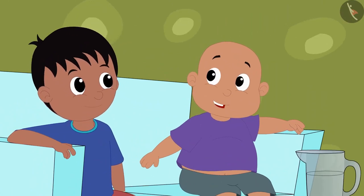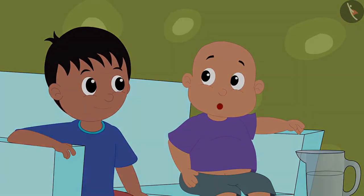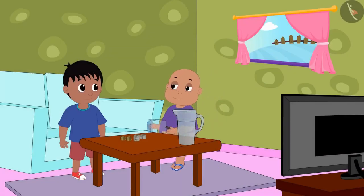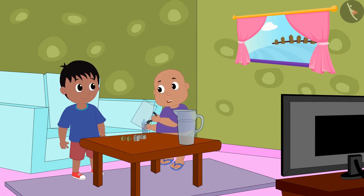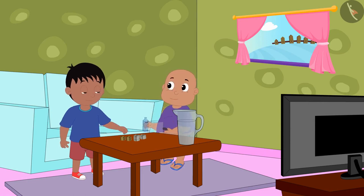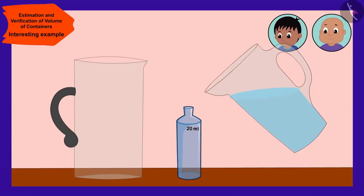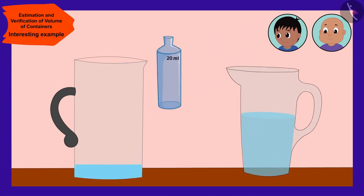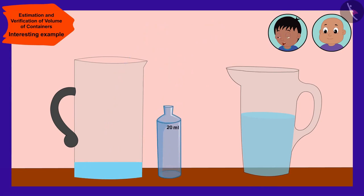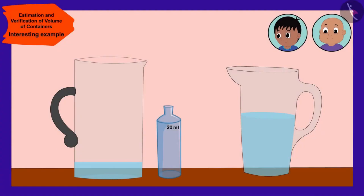Babalu has a 20 ml bottle and a jug. We will fill the empty bottle completely with water, then empty the bottle into the jug. Because the volume of the bottle is 20 ml, the jug currently has 20 ml of water. With a pen, we will mark 20 ml at the level of water. Babalu quickly made a mark of 20 ml at the water level.